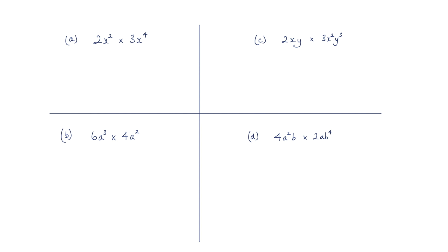In this series of questions we have to simplify each of these expressions. Now for this first one here, 2x squared multiplied by 3x to the power of 4, the way we tackle these is just deal with the coefficients first.